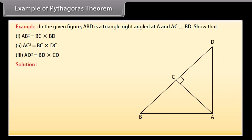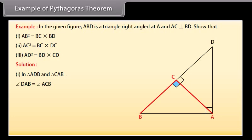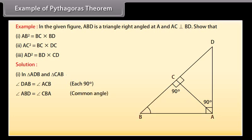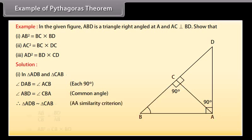Solution, part 1: In triangles ADB and CAB, angle DAB = angle ACB (each 90°) and angle ABD = angle CBA (common angle). Therefore triangle ADB is similar to triangle CAB by AA similarity criterion, which implies AB² = CB × BD.